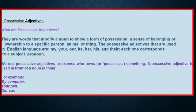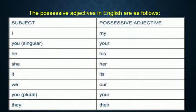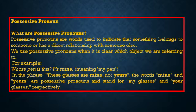Our car means the car is owned by us. The possessive adjectives in English are as follows: if the subject is 'I,' the possessive adjective is 'my'; 'you' — 'your'; 'he' — 'his'; 'she' — 'her'; 'it' — 'its'; 'we' — 'our'; 'you' — 'your'; 'they' — 'their.'